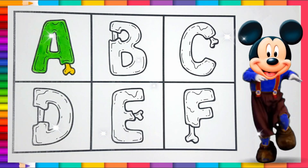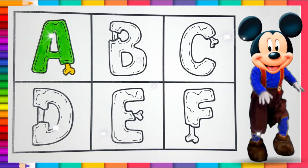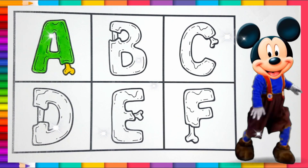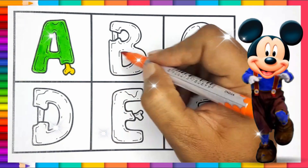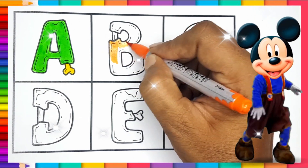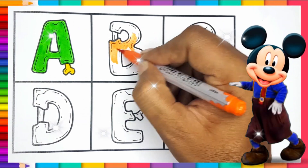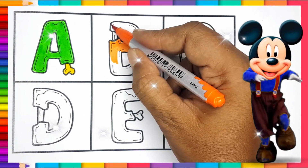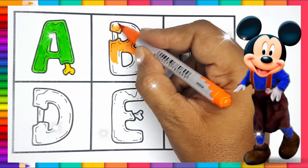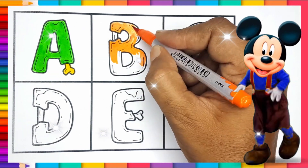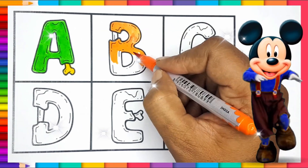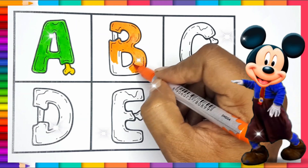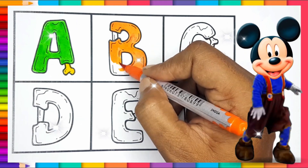A, B, C, D, E, F, G, H, I, J, K, L, M, N, O, P, Q, R, S, T, U, V, W, X, Y, and Z. Now I know my ABCs, next time won't you sing with me.